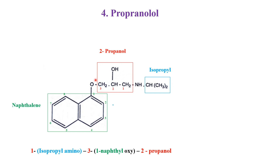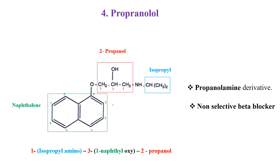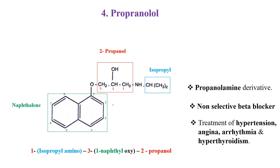It is having propanol connected with an amino group, so it is a propanol-amine derivative. It is a non-selective beta blocker, used in the treatment of hypertension, angina, arrhythmia, and hyperthyroidism.